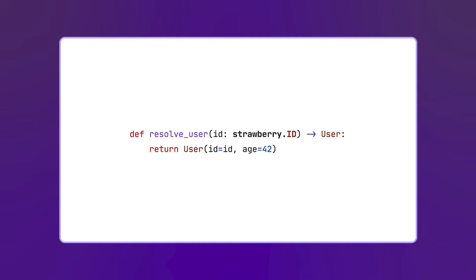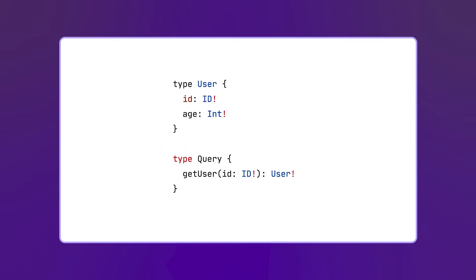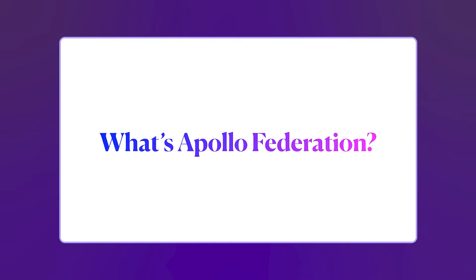This is how our schema is going to look like — we have the user type as before, but we also have the query type which has a getUser field requiring an id parameter of type id. Now let's see what federation is. To put it simply, Apollo Federation is a way to combine multiple GraphQL APIs into one, so you can have an architecture based on microservices while still having clients use a single graph to access all the resources of the API.